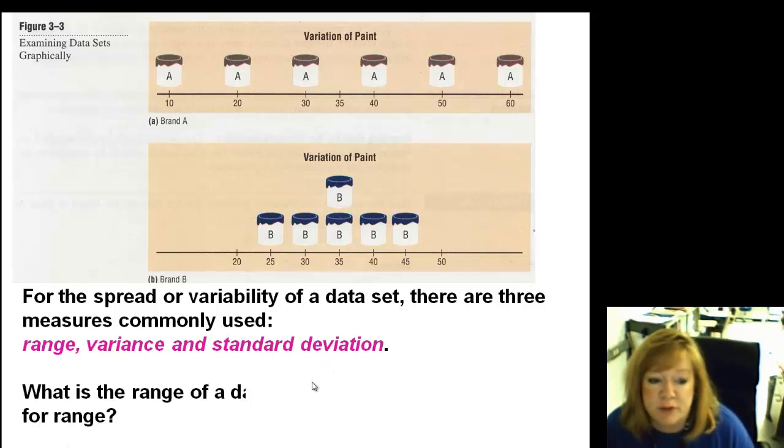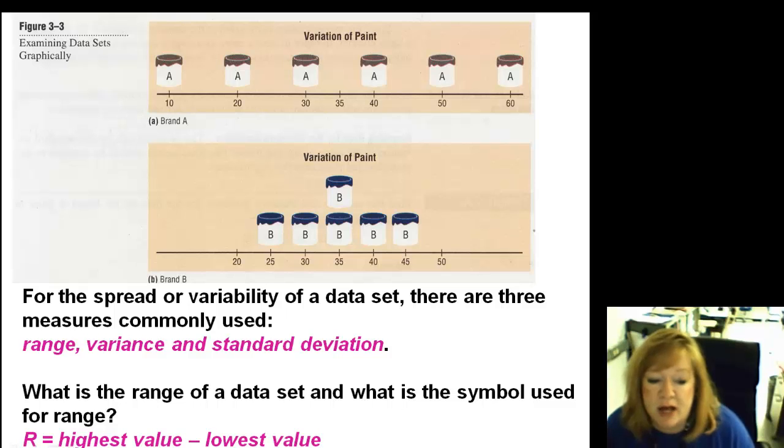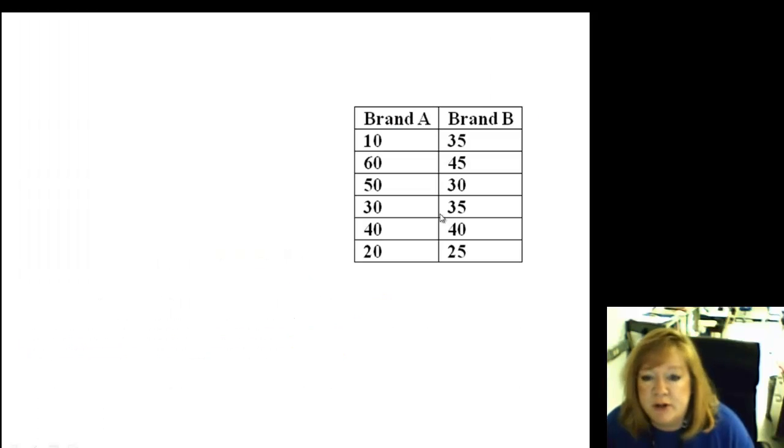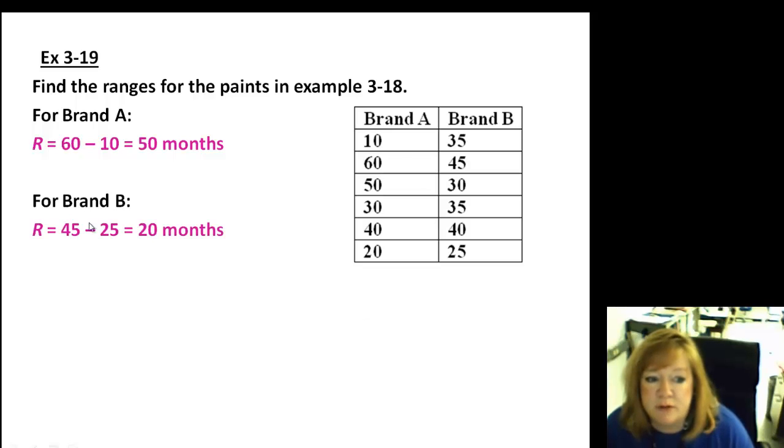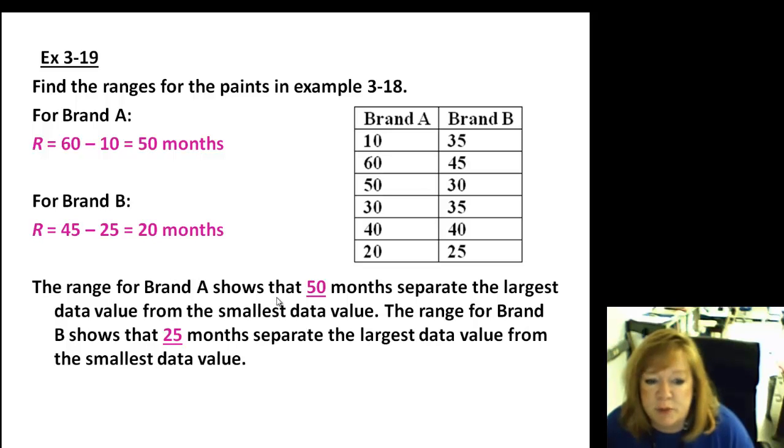Range, you're already familiar with. That's just the highest minus the lowest. So the symbol for that is R, and it equals the highest value minus the lowest value. So let's look here. We're going to get with example 3-19, find the ranges. Well, if I do the high minus the low for brand A, that's going to be 60 minus 10, that's 50 months. And for brand B, 45 minus 25, 20 months. Notice brand A, the one that's more varied, has a bigger range than brand B.